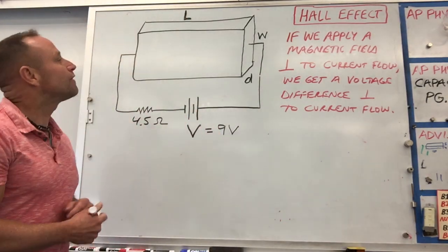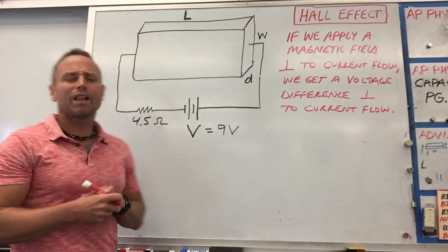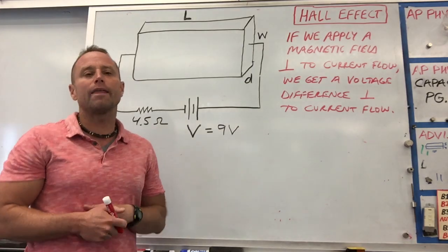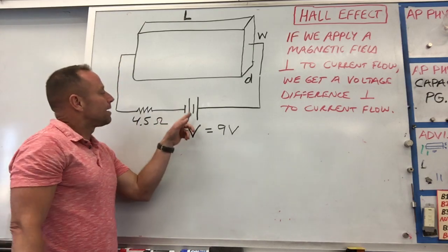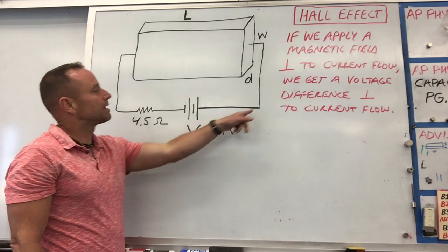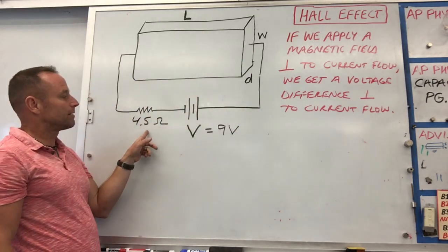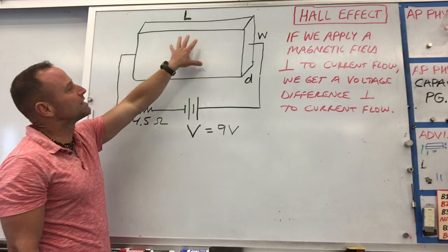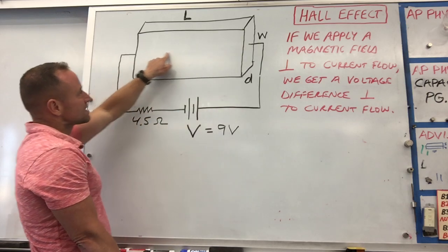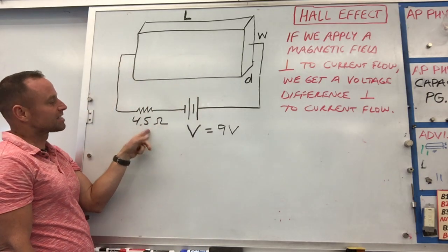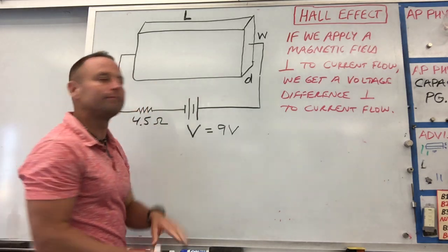I'm going to introduce you to something called the Hall Effect, which is an interesting effect observed when you apply a magnetic field perpendicular to the way that current is flowing through a conductor. Here's a battery, a giant block of copper, and a resistor. We'll take the dimensions of this copper block to be large enough that its resistance is very low, so most of the resistance in the circuit is in the resistor — giving us about 2 amps running through the circuit.